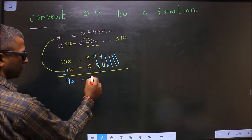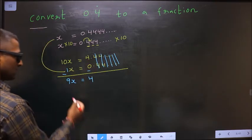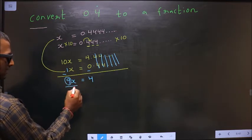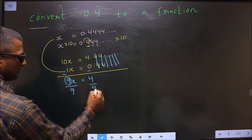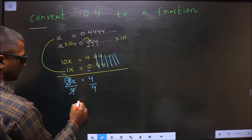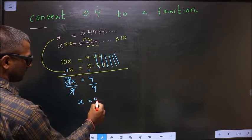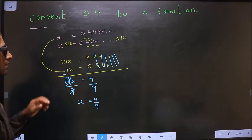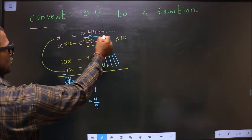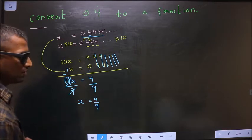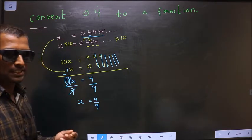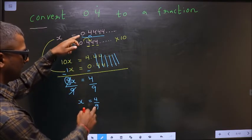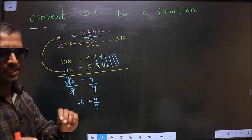To get x, I should remove this 9, so divide by 9 on both sides. This cancels out, and I get x equals 4 by 9. We assumed this to be x and we got this equal to x. That means these two have to be equal.